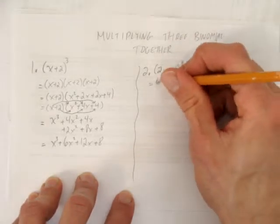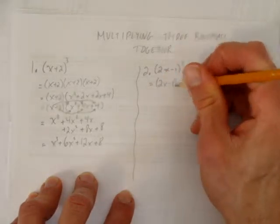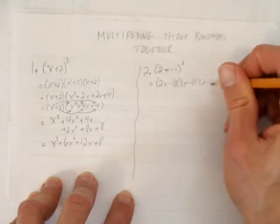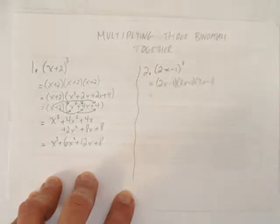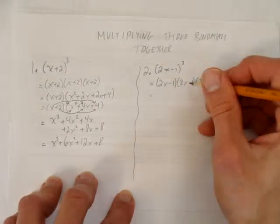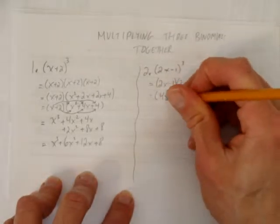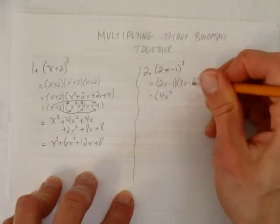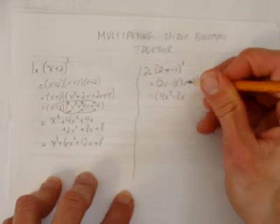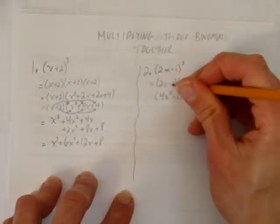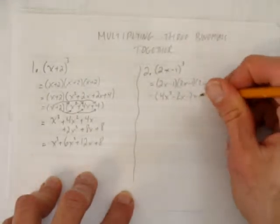2x minus 1 all to the power of 3. That's 2x minus 1 times 2x minus 1 times 2x minus 1. If you want, I can do the first two together this time. So, I'll get 2x times 2x is 4x squared. 2x times minus 1 is minus 2x. Minus 1 times 2x is minus 2x. And minus 1 times minus 1 is plus 1.